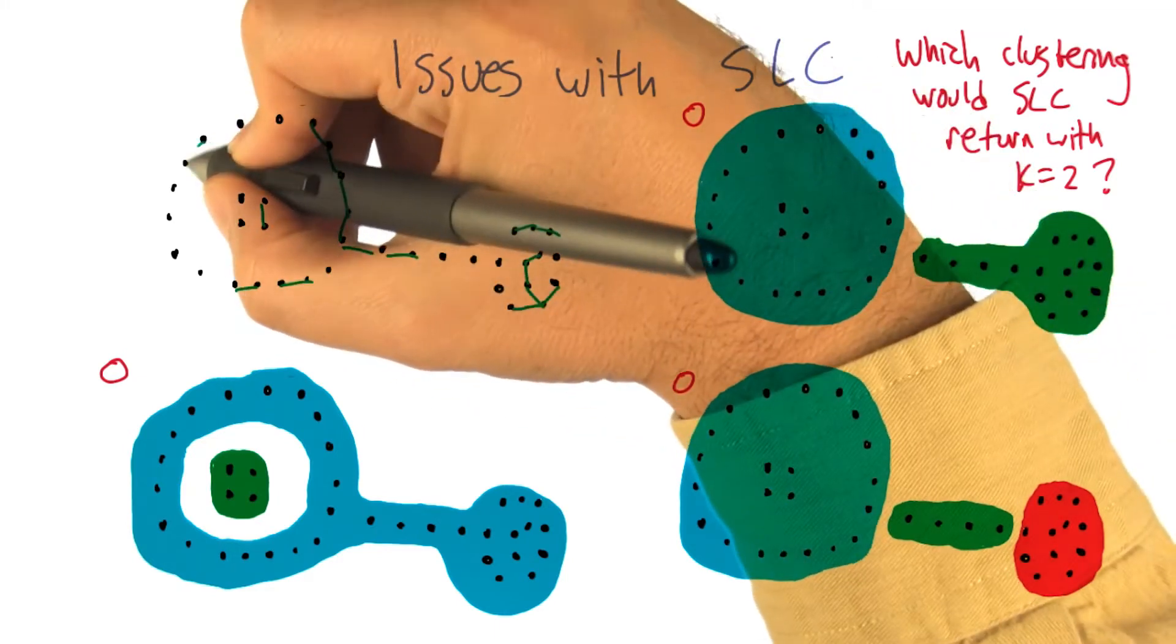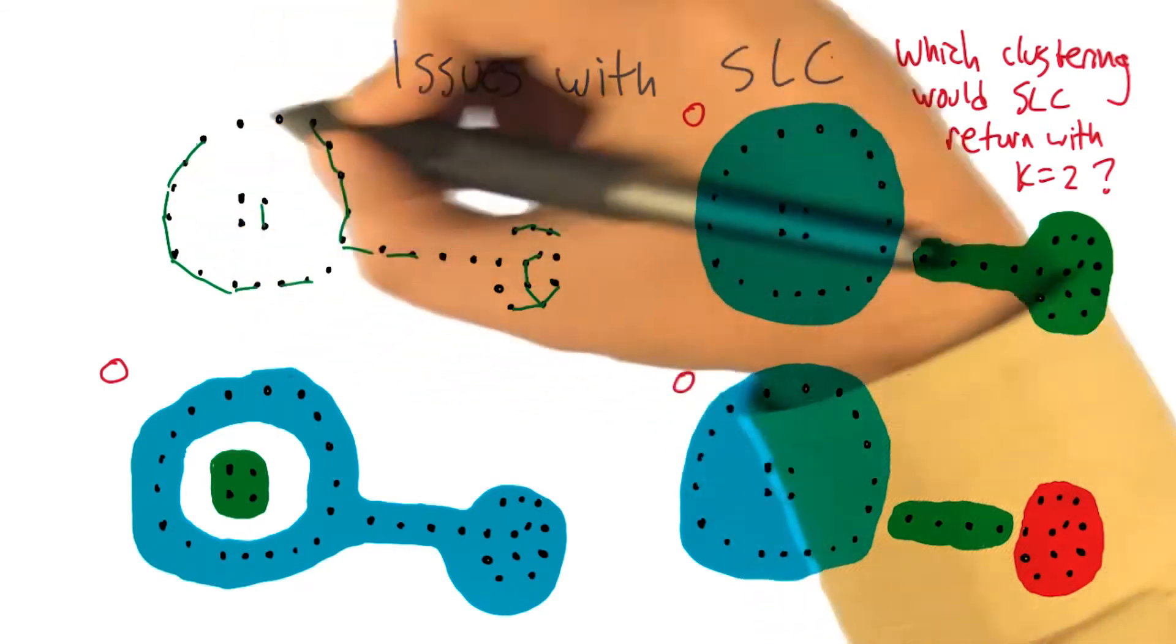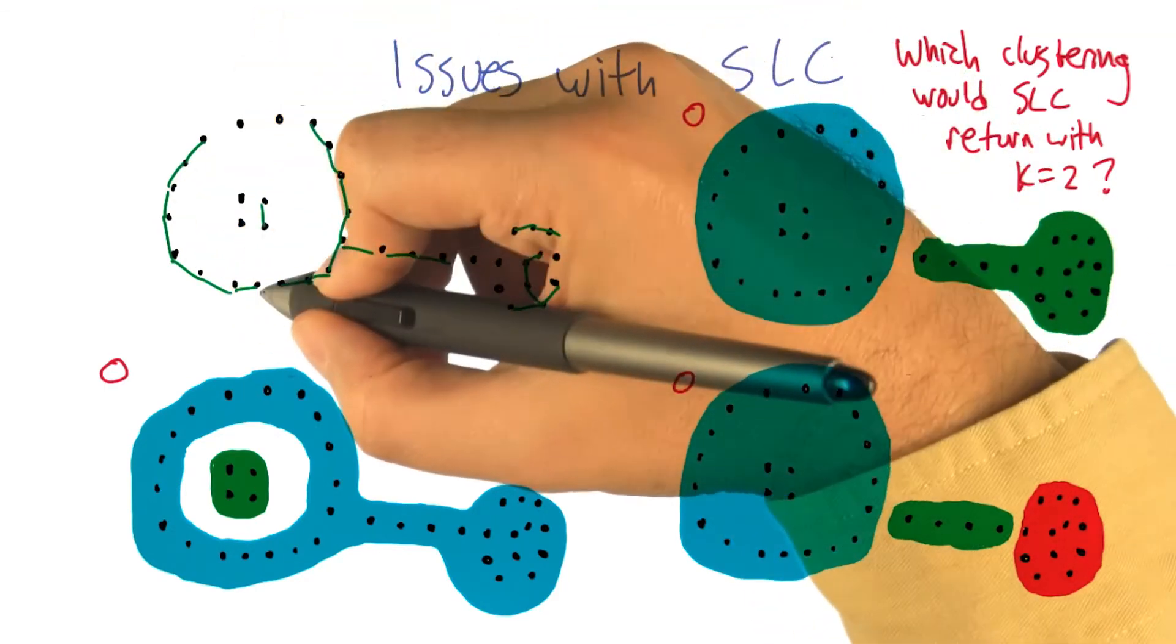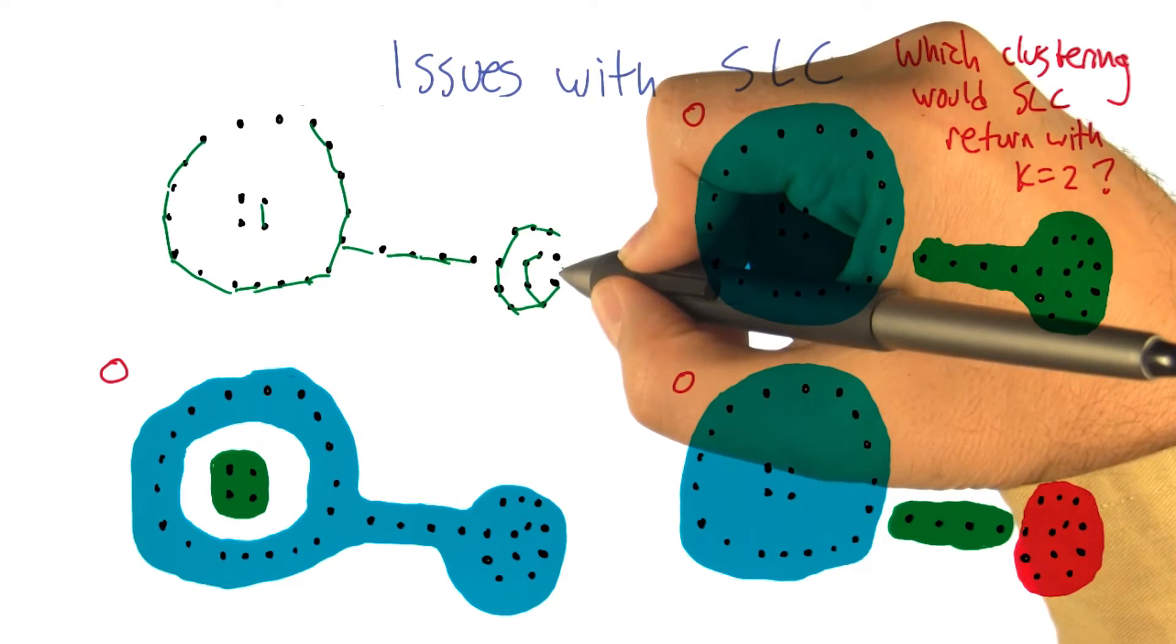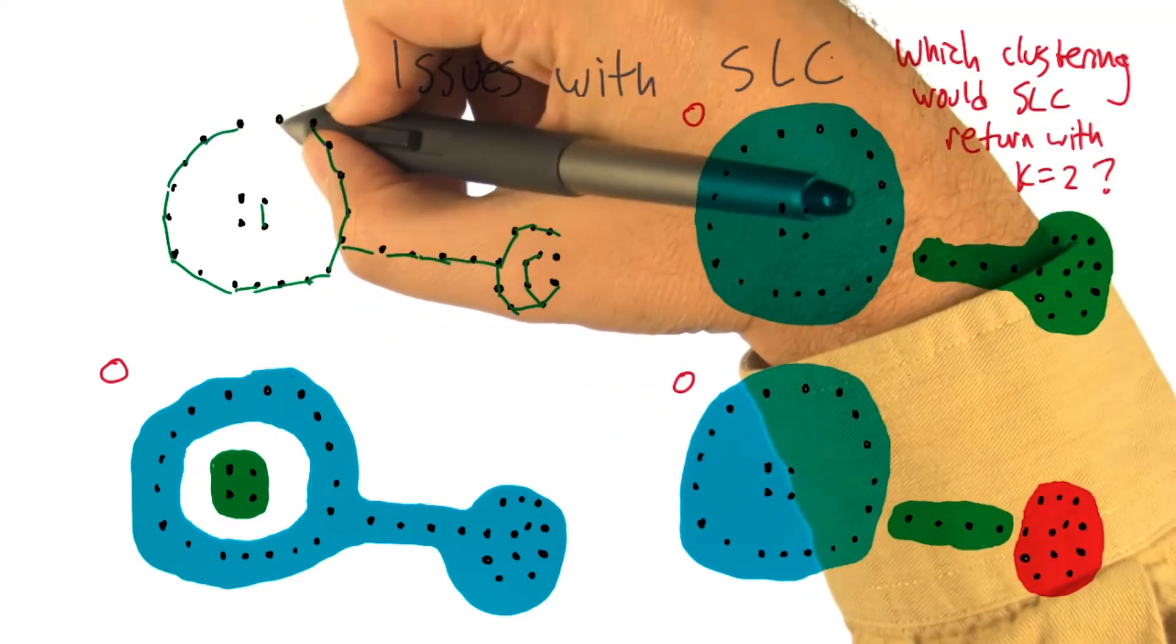Mm-hm. And that's the key thing there, that you were drawing before, that the bridge between the two big circles. Every point there is always going to be closer to one of the points on the outer circle clusters than it's ever going to be to anything else.